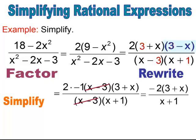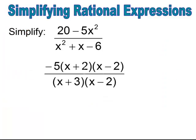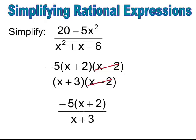Pause and try. Here, I'm switching it around by pulling out the negative 5 first, then simplifying, and I end up with negative 5 times x plus 2 all over x plus 3.